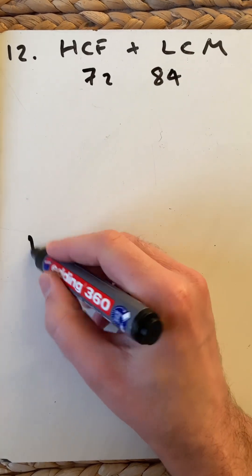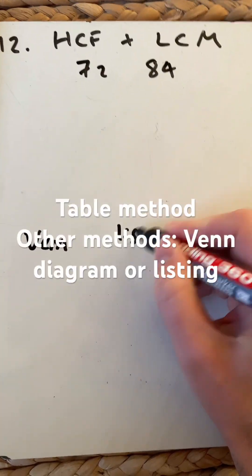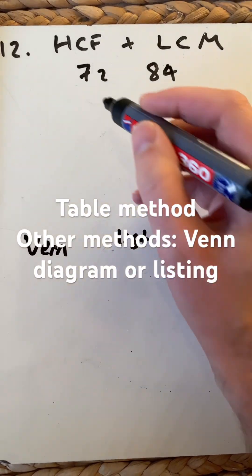You could use the Venn diagram, list, or factor trees, but I'm going to show you the table method.